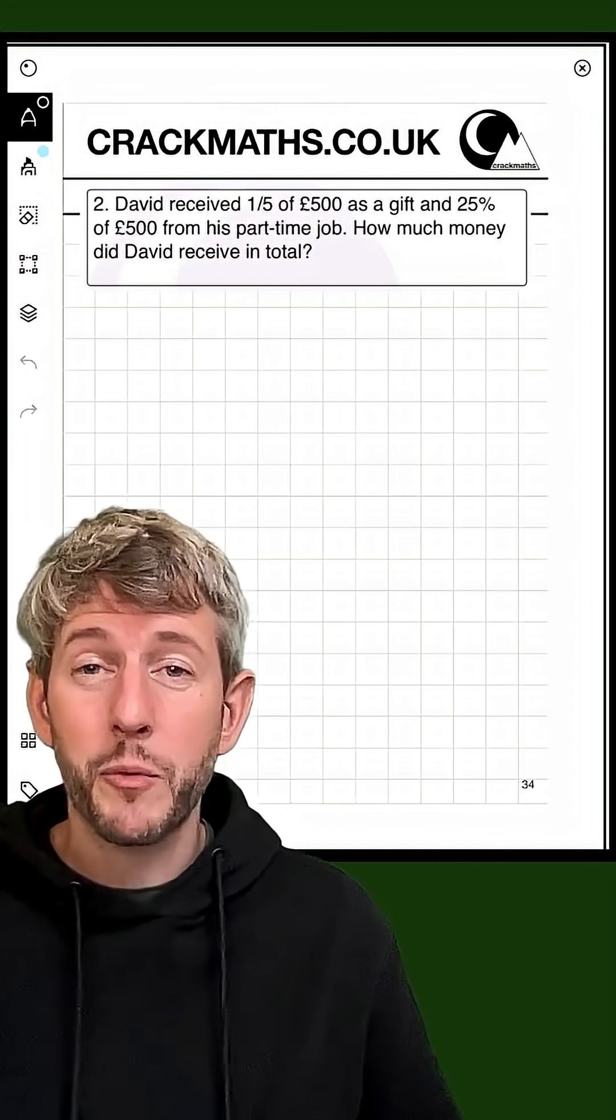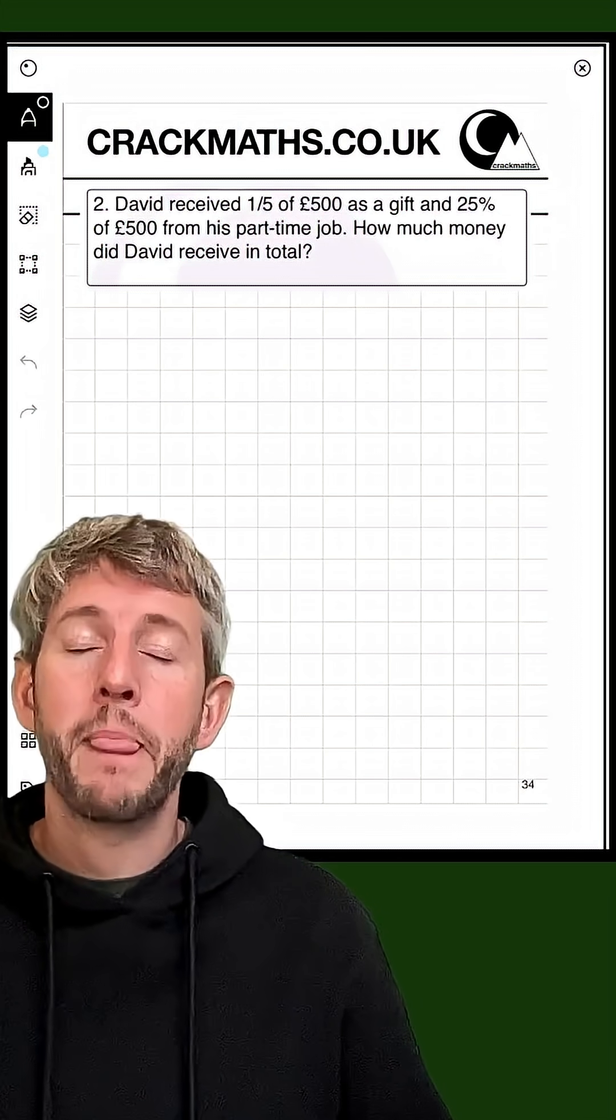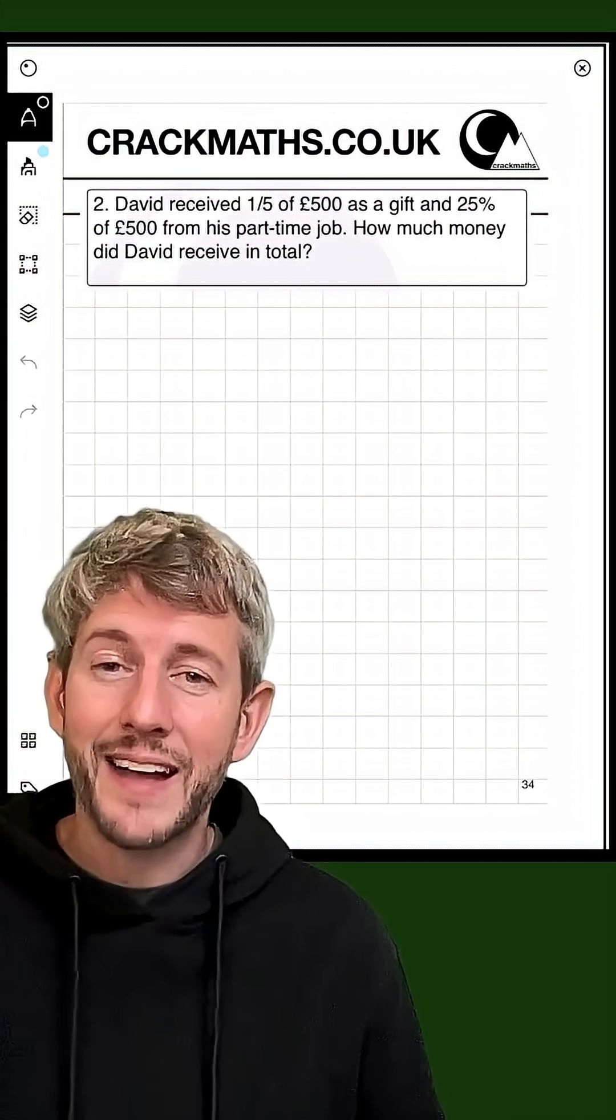Okay, right, so what we have to do is we have to work out a fifth of 500 pounds and then 25% of 500 pounds and add it together.